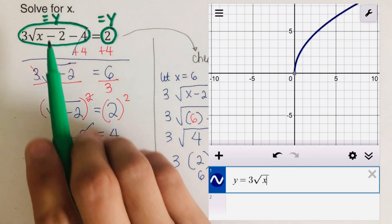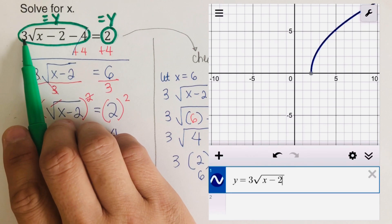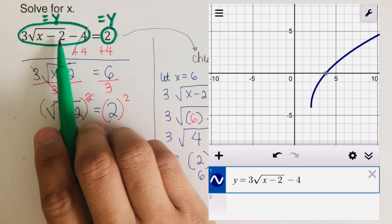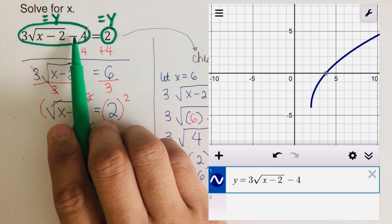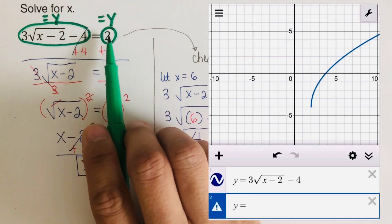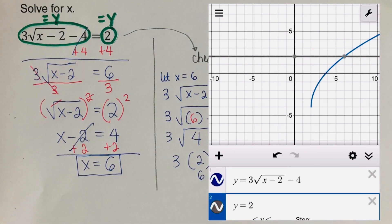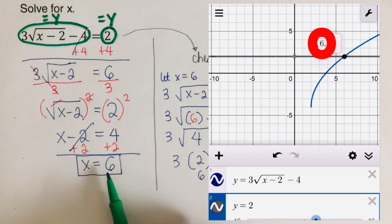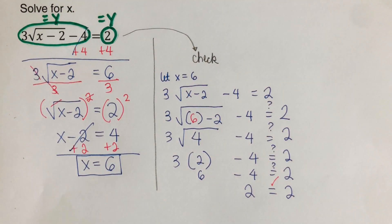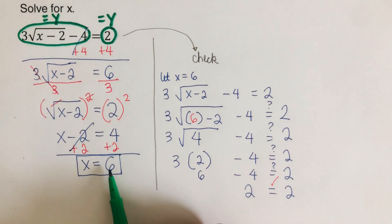We have to type in y equals 3 square root of x minus 2, making sure that the minus 4 is outside the square root. The other equation is y equals 2. We can see that the solution is x equals 6. We are solving for x only, so our answer is x equals 6.